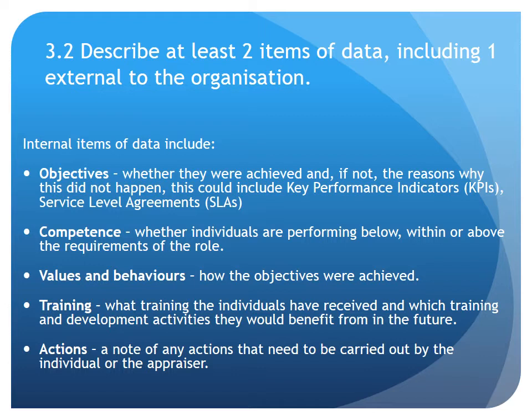Assessment criteria 3.2 asks you to describe at least two items of data that you would use to either measure performance or use in a performance review, and they should include one piece of data that's external to the organisation. Internal items of data include objectives — whether they were achieved and if not, the reasons why. This could include key performance indicators or KPIs, or service level agreements, also known as SLAs. Other internal data includes competency — whether individuals are performing below, within, or above the requirements of the role. Values and behaviours can also be assessed, examining how the objectives were achieved.